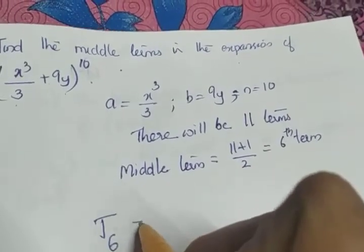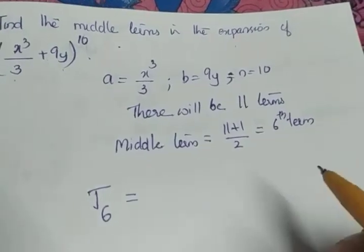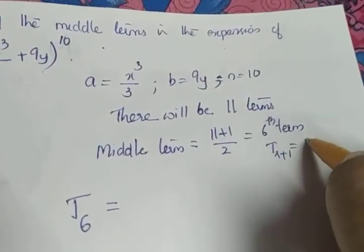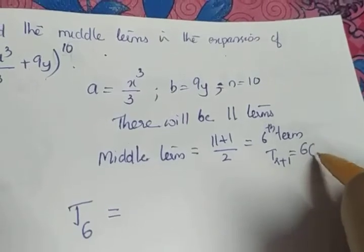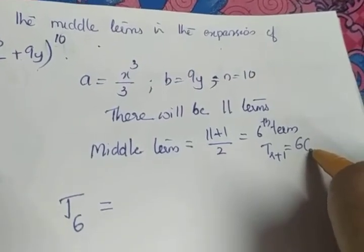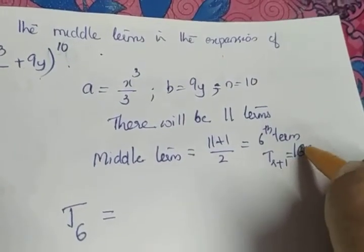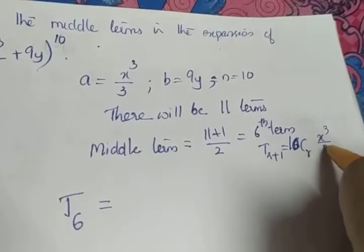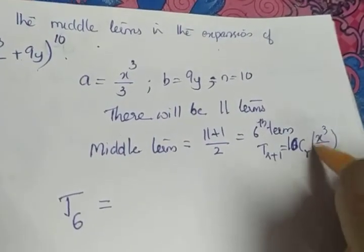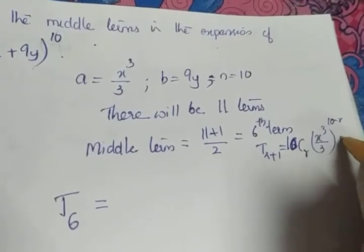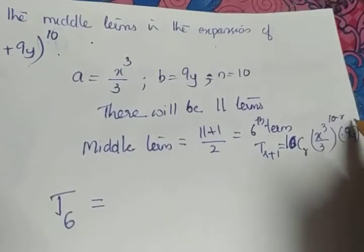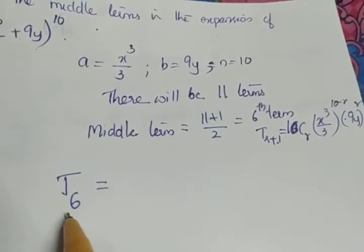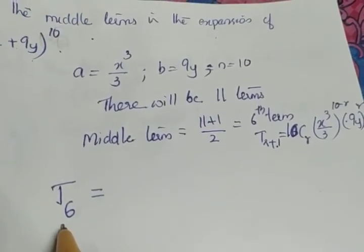Before writing T6, we write the general term: T(r+1) = 10Cr × (x³/3)^(10−r) × (9y)^r. We have the general term T(r+1). What we require is T6, so what is the value of r?